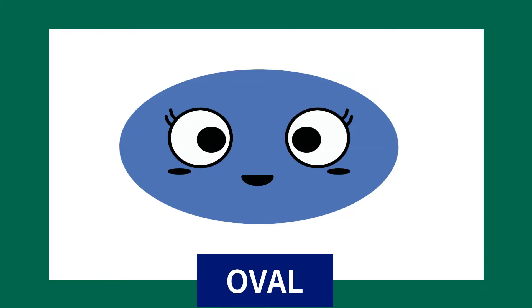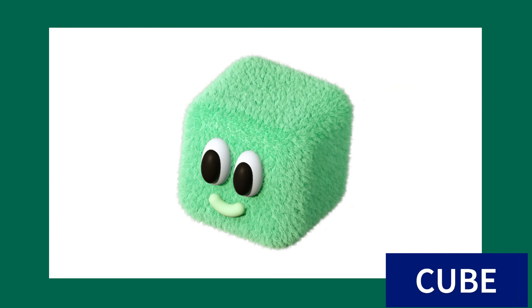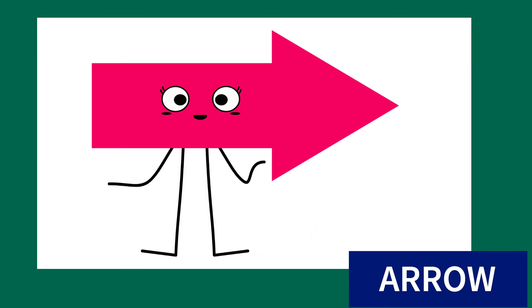Oval. This shape is called oval. Circle. This shape is called circle. Cube. This shape is called cube. Arrow. This shape is called arrow.